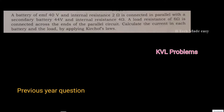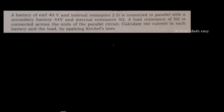A battery of EMF 40 volt and internal resistance 2 ohm is connected in parallel with a secondary battery of 44 volt and internal resistance 4 ohm. A load resistance of 6 ohm is connected across the ends of the parallel circuit.